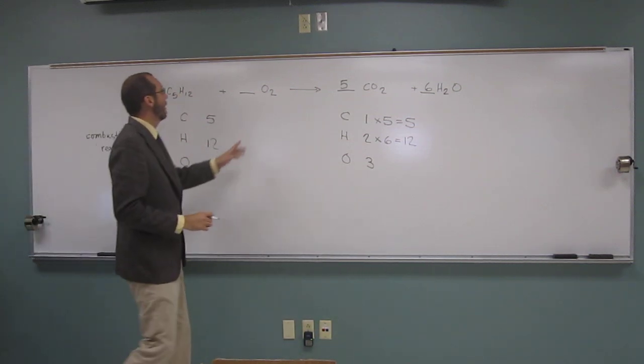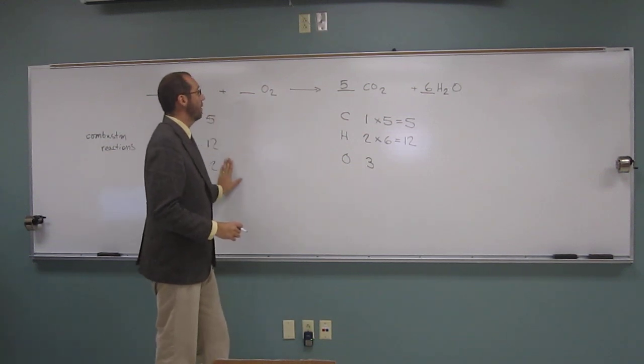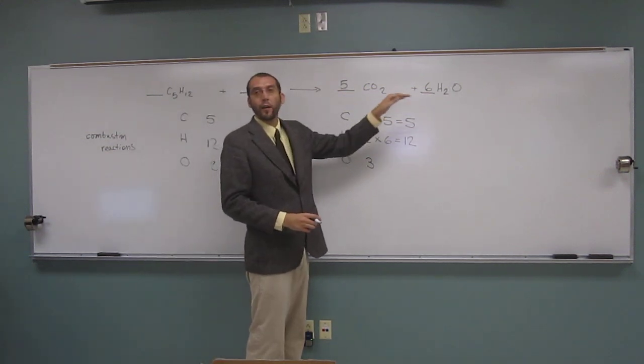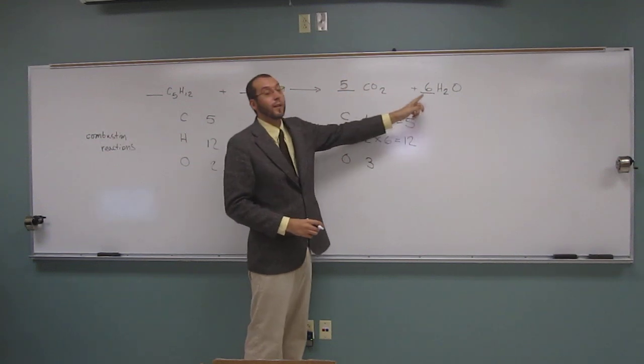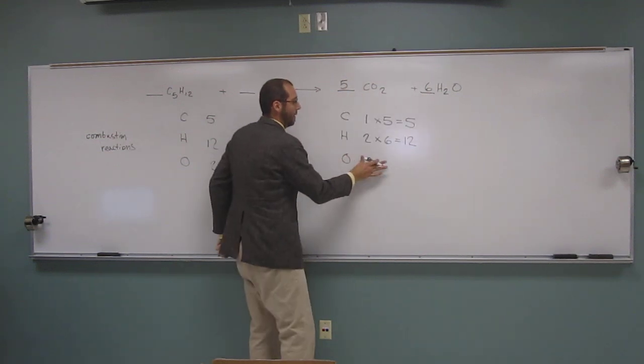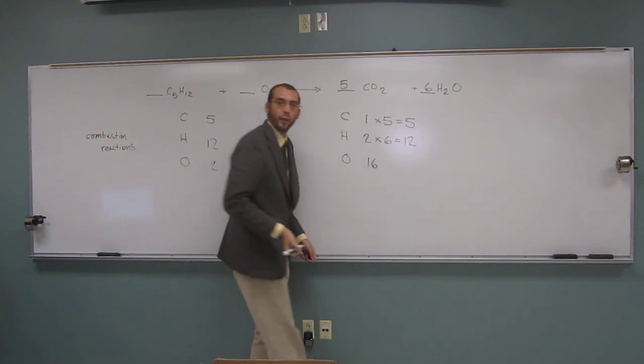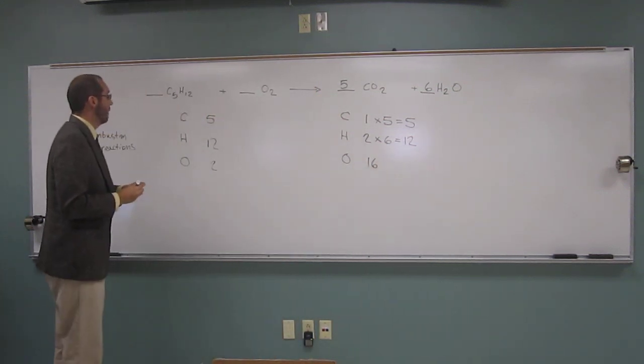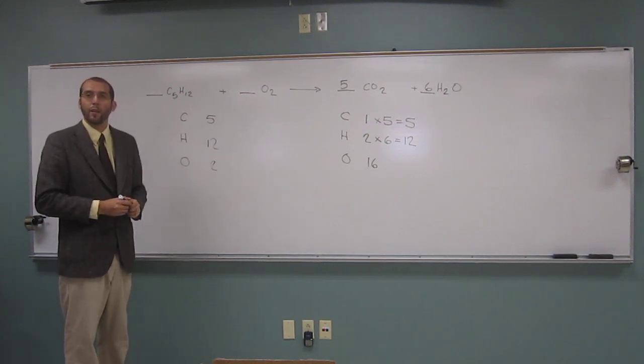But now, our oxygens aren't balanced, right? Because over here we have 2, but here we have how many now? We have 16. Yeah. So 2 times 5 is 10 plus 6 is 16. So let's erase this one. We're no longer looking at 3. We're looking at 16.